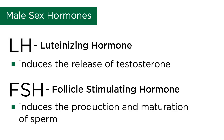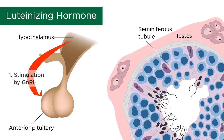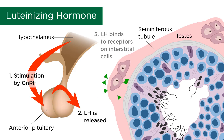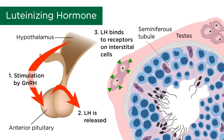We will start with luteinizing hormone and its downstream effects. Upon stimulation of gonadotropic releasing hormone, luteinizing hormone is released from the anterior pituitary into the circulation, where it binds to receptors on interstitial cells of the testes. Interstitial cells are found adjacent to seminiferous tubules, where sperm production occurs.